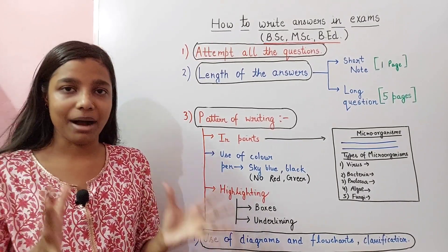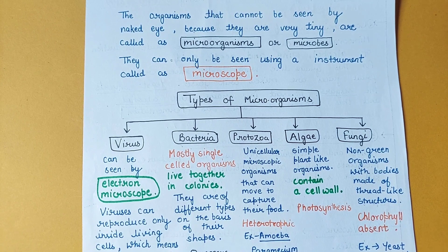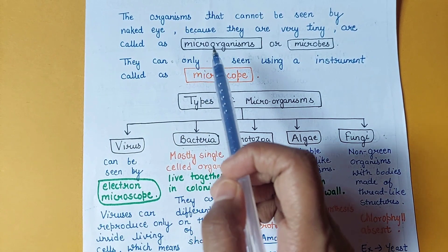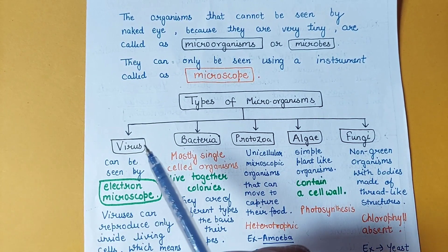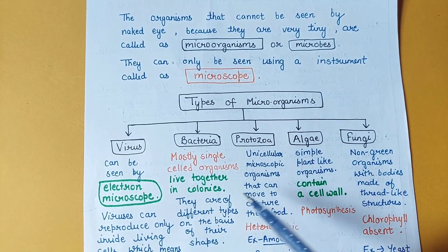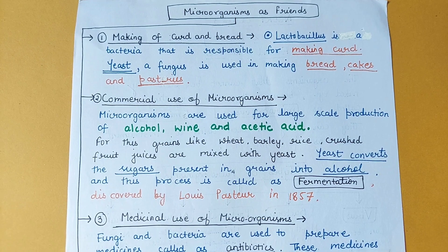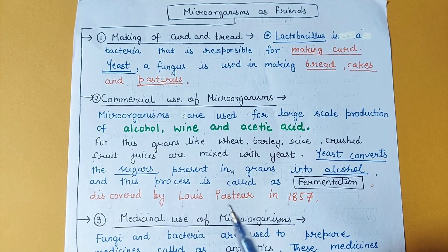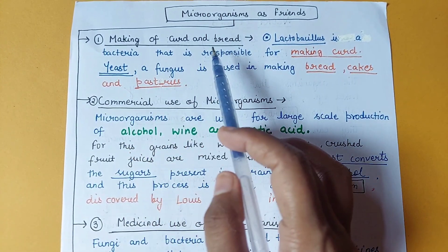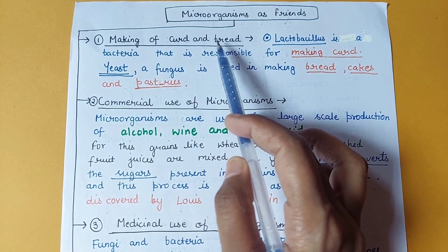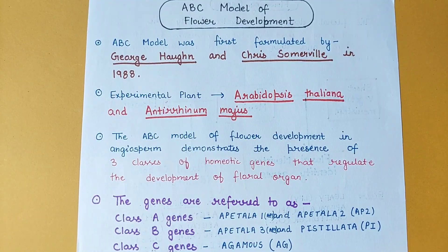Here is the first example sheet on microorganisms. If you have to write a short note on microorganisms and its types, first highlight the main keywords about microorganisms, then draw a flow chart for the types and put details under each heading. This makes your answer more effective compared to normal paragraph writing. For the sheet on useful impact of microorganisms, you can put a heading by underlining or highlighting the main point, then mention details under that heading.